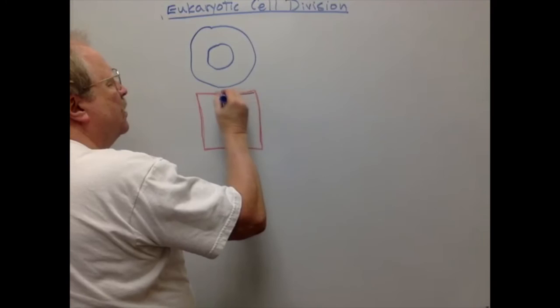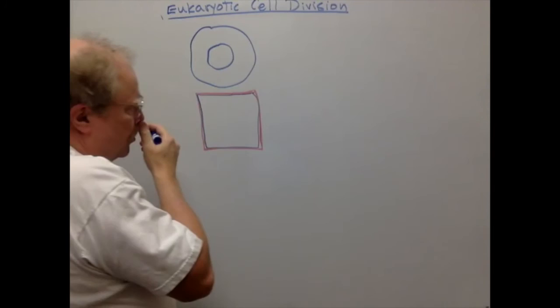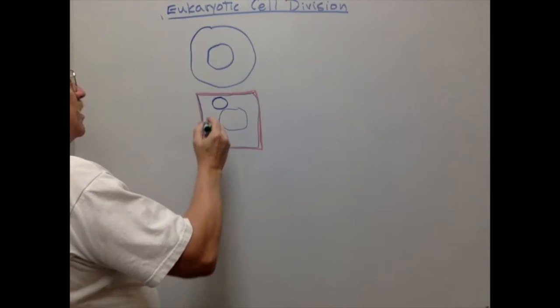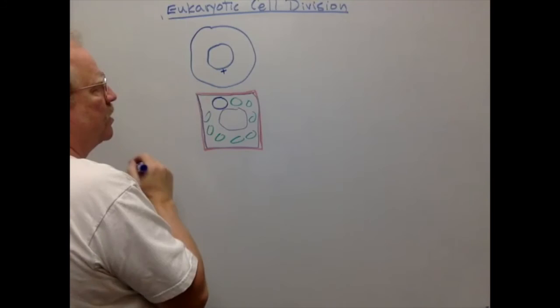The cell wall is actually outside the cell membrane. The plant cell may also have a large central vacuole and a nucleus. If it's a leaf cell, it may have chloroplasts in the cytoplasm. One important thing: the plant cell does not have centrioles, whereas the animal cell does.